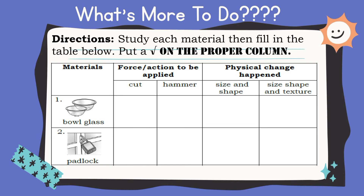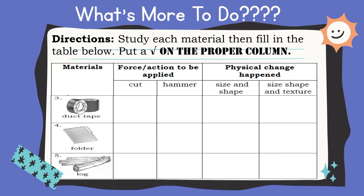Now let's have some practice — what's more to do? Study each material then fill in the table below. Put a check on the proper column. The materials listed are: bowl glass, padlock, duct tape, folder, and lot. Are you ready to check your answers? Now let's check your answers. Good job, kids!